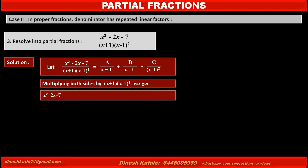After multiplying by the LCM, the left-hand side becomes x² - 2x - 7. On the right-hand side, the first term becomes A(x-1)², the second term becomes B(x+1)(x-1), and the third term becomes C(x+1). Consider this statement as equation 1.